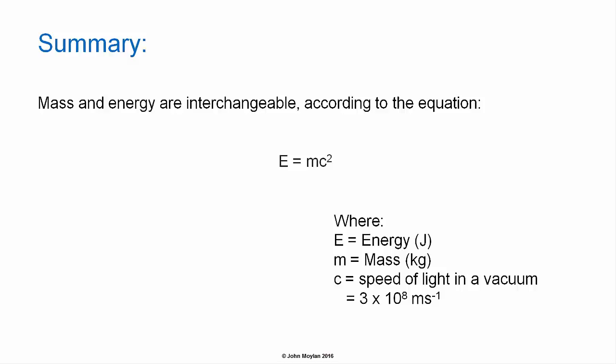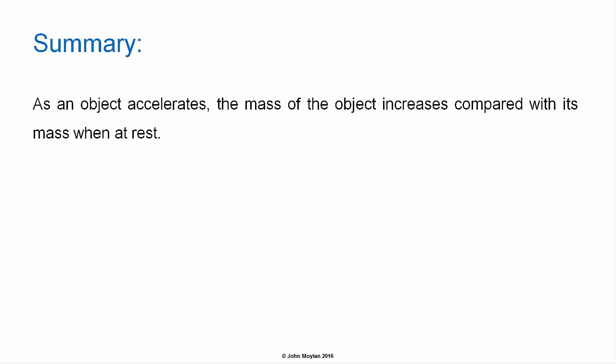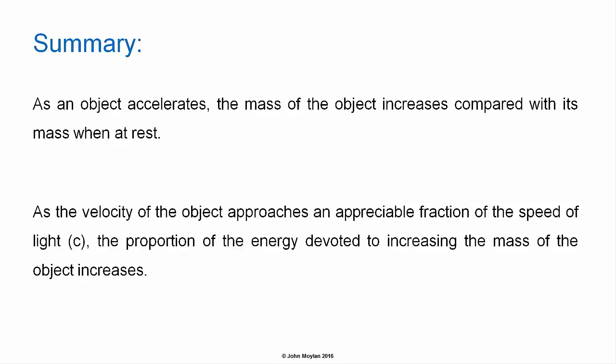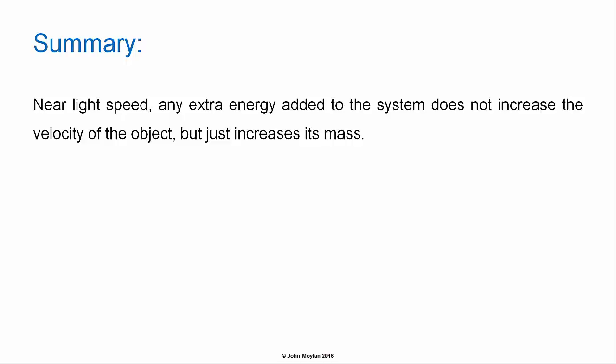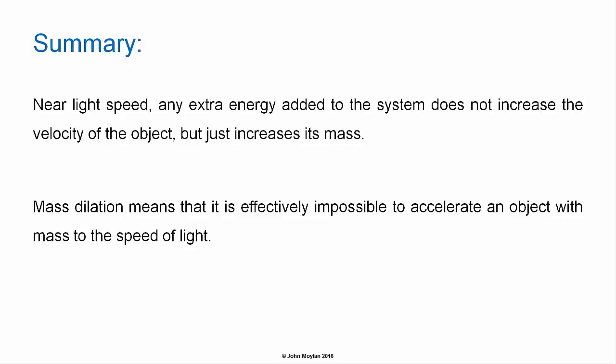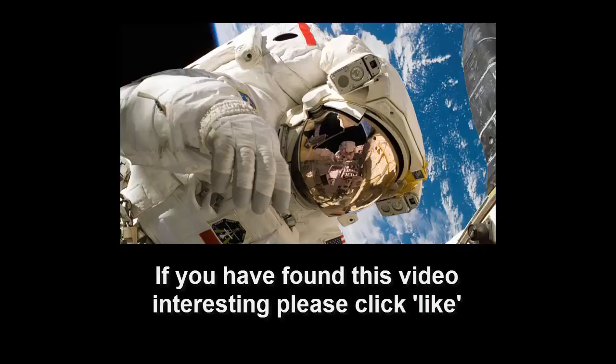As an object accelerates, its mass increases compared with its rest mass. As velocity approaches an appreciable fraction of the speed of light, the proportion of energy devoted to increasing the mass of the object increases. Near the speed of light, any extra energy added does not increase the velocity but only increases the mass. Mass dilation means it is effectively impossible to accelerate an object with mass to the speed of light.